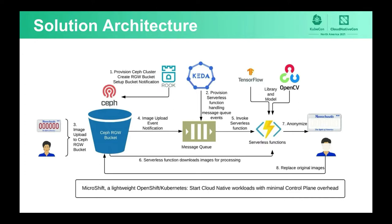The whole workload runs on the MicroShift cluster. MicroShift is aligned with the implementation of OpenShift and Kubernetes. It's very fast to start — usually in seconds versus minutes in regular Kubernetes and OpenShift clusters — and consumes very little resource. It can run on a small single-node cluster with only two CPU cores and two gigabytes of memory. We will spend more time on these components in the deep dive sessions.